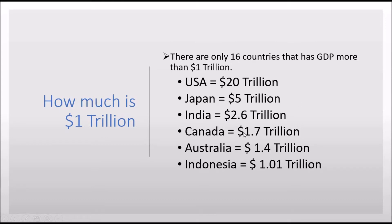Canada has 1.7 trillion dollars, Australia has 1.4 trillion dollars, and Indonesia has around 1 trillion dollars. So except for these 16 countries, all other countries have their GDP less than 1 trillion dollars.